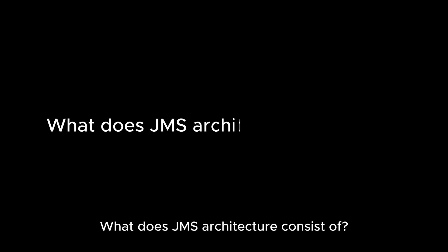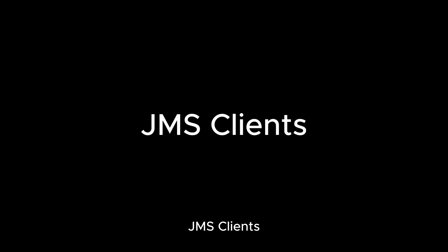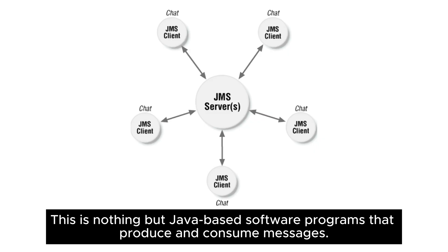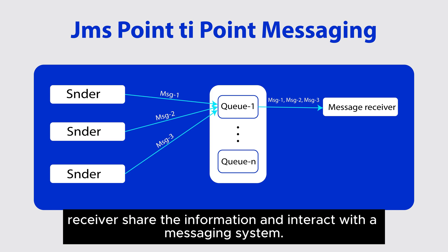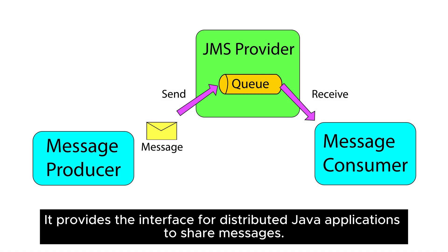What does JMS architecture consist of? JMS Clients — Java-based software programs that produce and consume messages. Messages — the objects through which JMS clients, i.e., sender and receiver, share information and interact with a messaging system. JMS Provider — provides the interface for distributed Java applications to share messages.